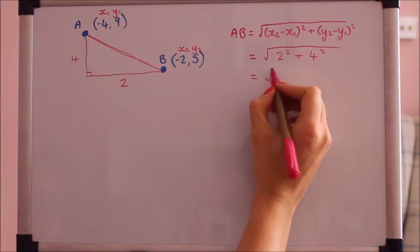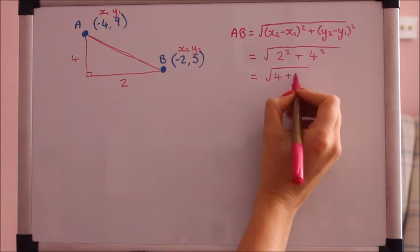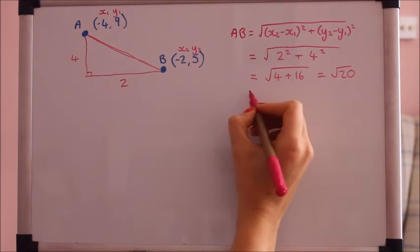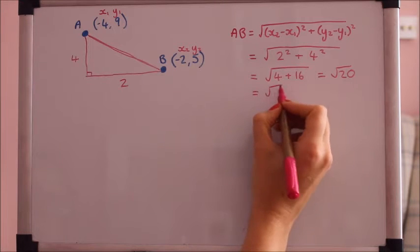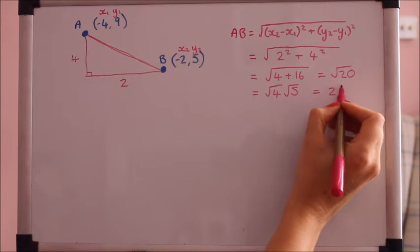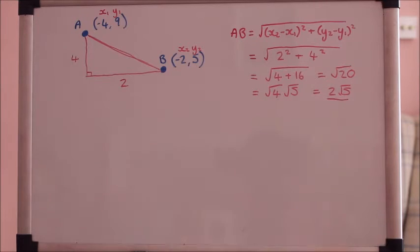So we'll get the square root of 4 plus 16 which is root 20. If you want to simplify that third as I said, that's brilliant. Root 4 times root 5. So that's 2 root 5. That's the distance AB.